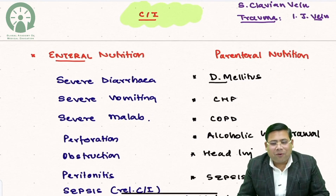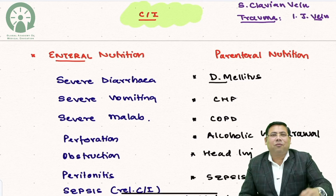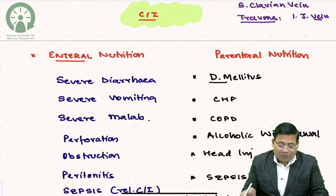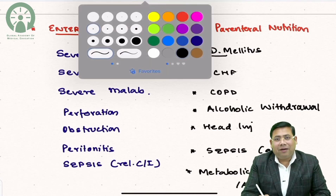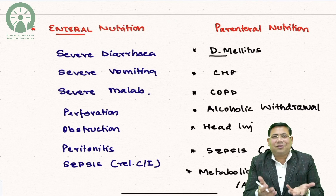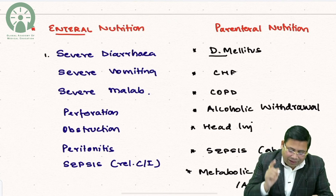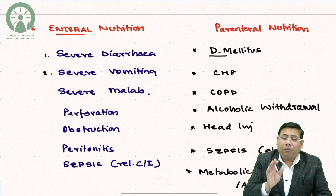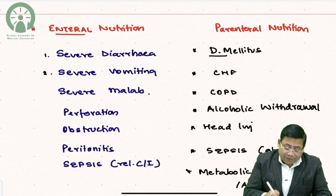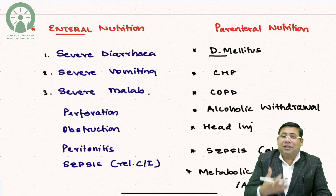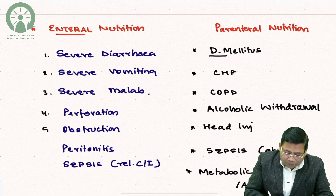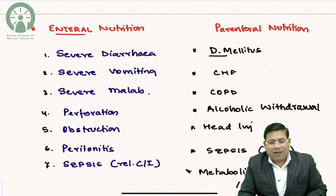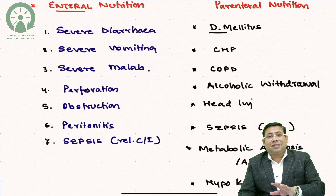Now, the contraindications to enteral nutrition: when the gut is not prepared, severe diarrhea, severe vomiting, severe malabsorption, perforation, peritonitis, and obstruction. Sepsis is a relative contraindication to enteral nutrition.